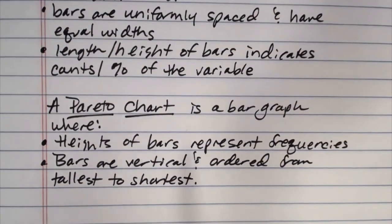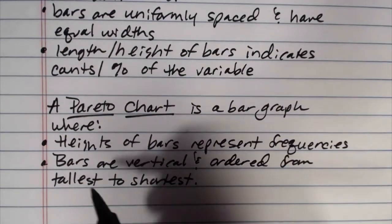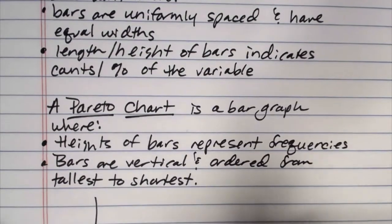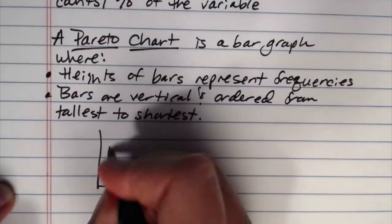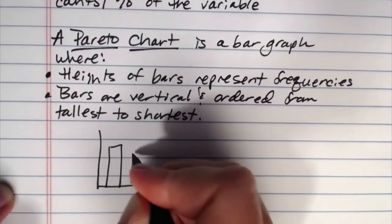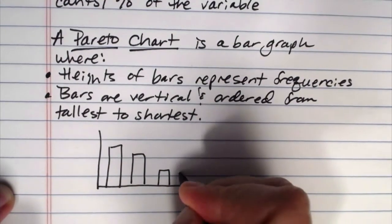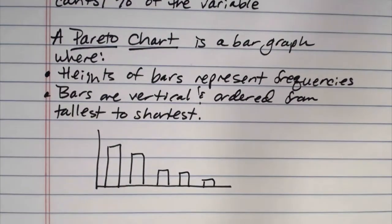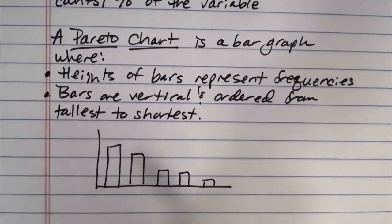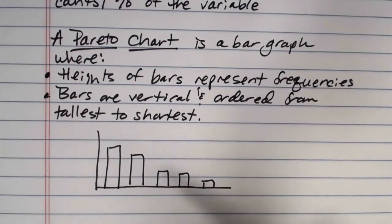So Pareto charts, the reason that you would use these, because they're ordered from tallest to shortest, you're always going to get a graph that has the tallest bars here or maybe something like this. And what these are really useful for is emphasizing categories in order of importance.